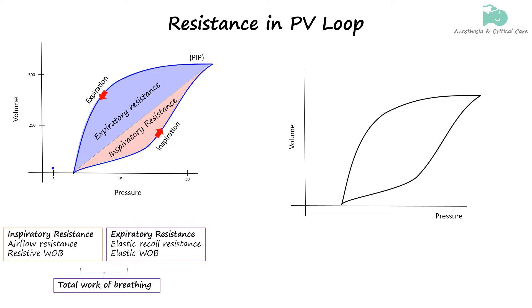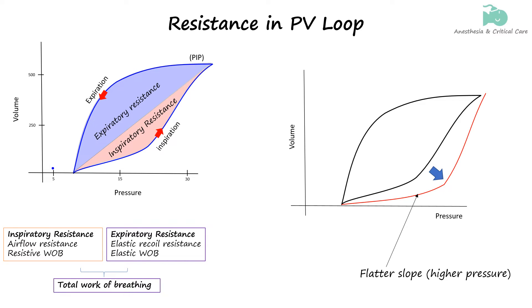In a pressure-volume loop, inspiratory resistance is reflected in the slope of the inspiratory limb. A flatter slope during inspiration indicates higher resistance, meaning that more pressure is required to achieve a given increase in lung volume. This suggests that the airways are offering more resistance to airflow during inhalation, necessitating greater effort from the ventilator or respiratory muscles.